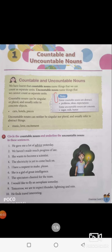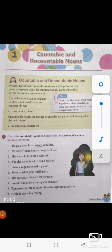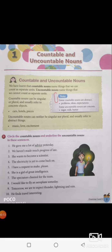Students, today we are going to look at our grammar portion — the first chapter which says countable and uncountable nouns. First of all we should know what is a noun. Noun is a word which refers to any thing, any person, any animal. It is commonly said that it is a naming word.